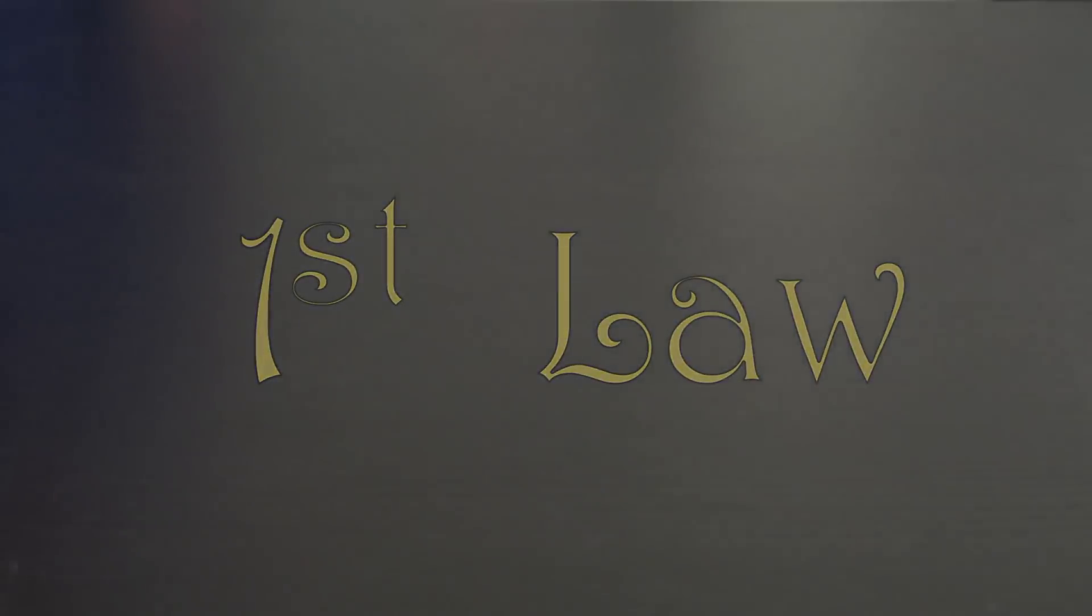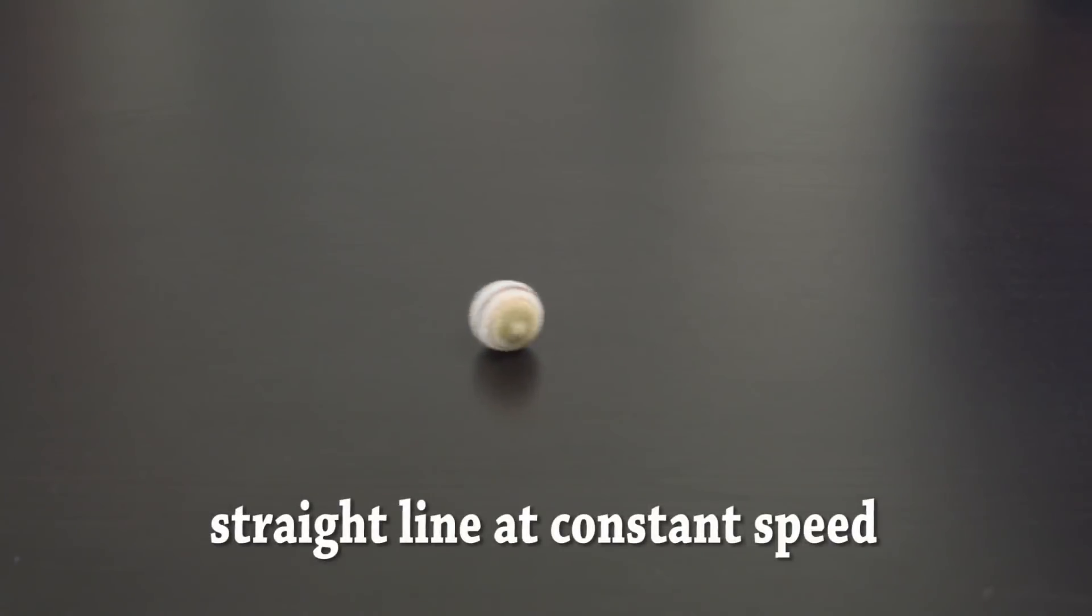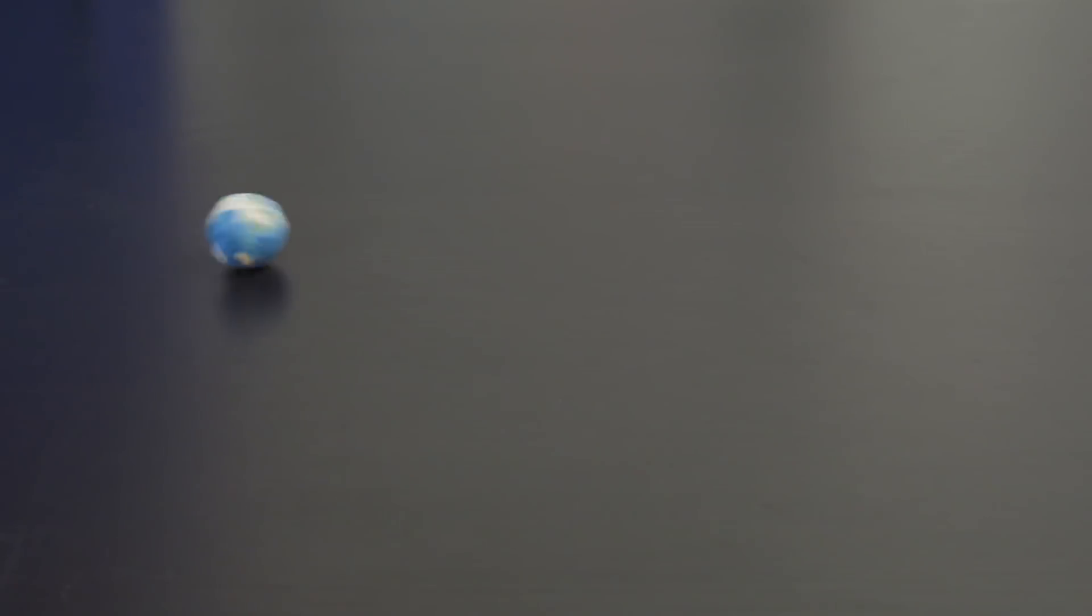First law. Objects like planets will continue in their state of motion, straight line at constant speed, unless acted on by a force, like gravity, which would bend them into a curve.